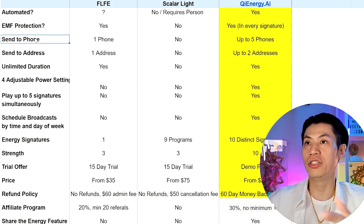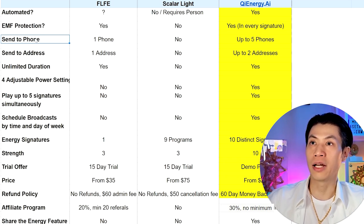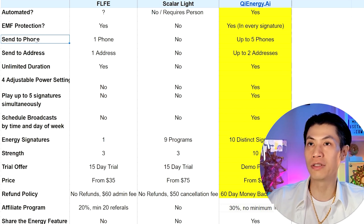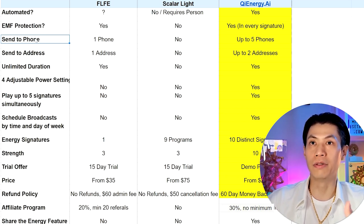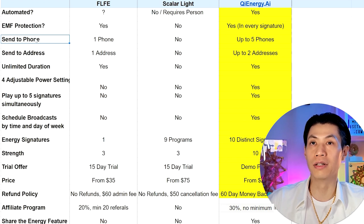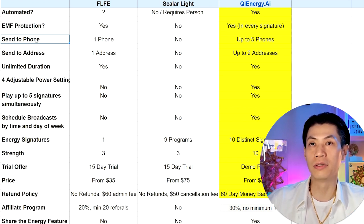Can you send the energy to your phone? Yes, you can send energy to a phone number through FLFE. Scalar Light does not send to a phone — you send a photo of yourself and they send it to the photo. Qi Energy AI allows you to send to up to five phones, so if you have family members or an elderly person living elsewhere, you can send to up to five people with the premium account.